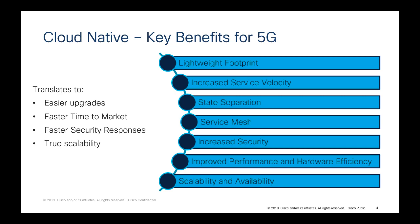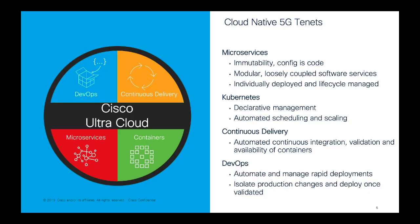The key benefits of cloud-native for 5G are the lightweight footprint, increased service velocity, state separation, service mesh, increased security, improved performance, hardware efficiency, and scalability and availability. All these benefits can be translated to easier upgrades, faster time to market, faster security response, and true scalability. Cisco Ultra Cloud contains four pillars: microservices, containers, DevOps, and continuous delivery.